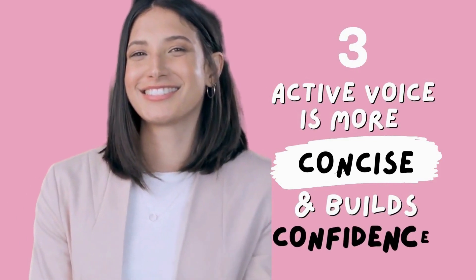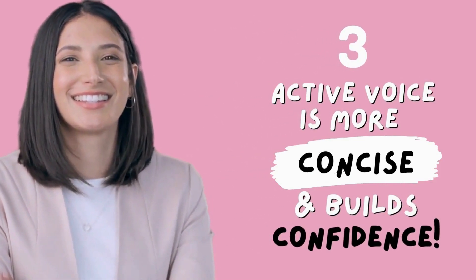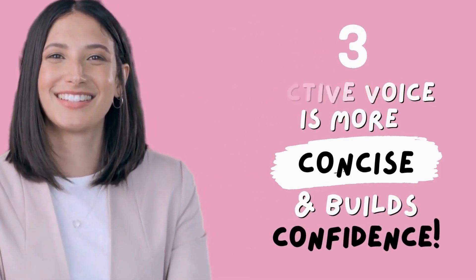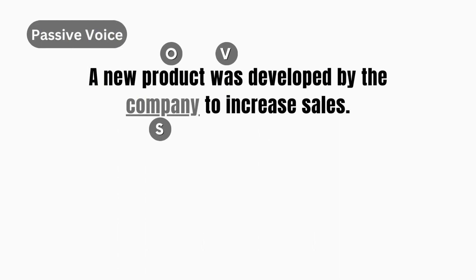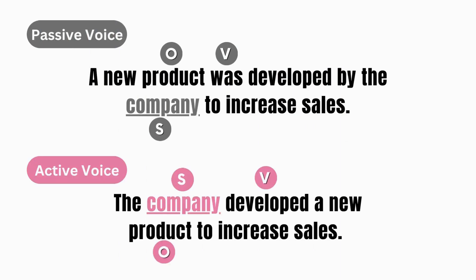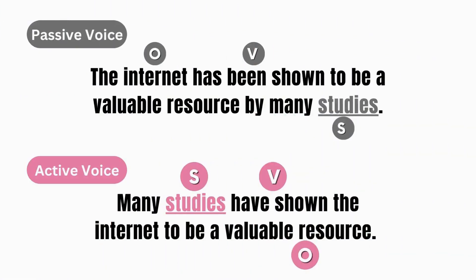The third point will make you ditch passive voice for good. Active voice is more concise and builds confidence. Let's look at these two examples. Passive voice: 'A new product was developed by the company to increase sales.' Active voice: 'The company developed a new product to increase sales.' Both mean the same thing, but the active voice sentence is more direct and easier for teachers to read. And here's how it builds confidence in your writing.